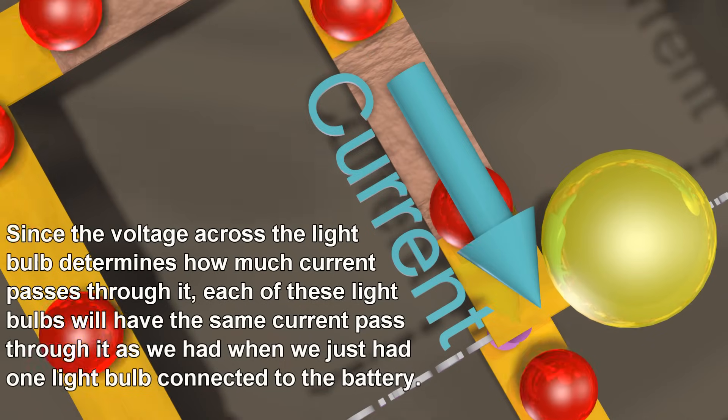Since the voltage across the light bulb determines how much current passes through it, each of these light bulbs will have the same current pass through it as we had when we had just one light bulb connected to the battery.